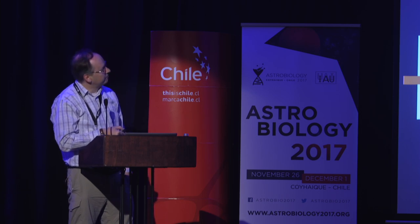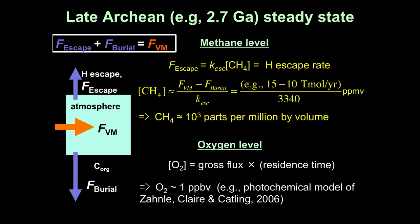One can put in numbers because the flux of hydrogen escape is basically proportional to the hydrogen-bearing reducing molecules in the upper atmosphere, such as methane. We think it was probably dominated by methane in the Archean. You can work out the constant from physics, put in estimates for these fluxes based on modern values, and calculate there would have been about 1,000 parts per million of methane by volume. Then, using photochemical models, you can work out the ground-level oxygen — something very small, like a part per billion.